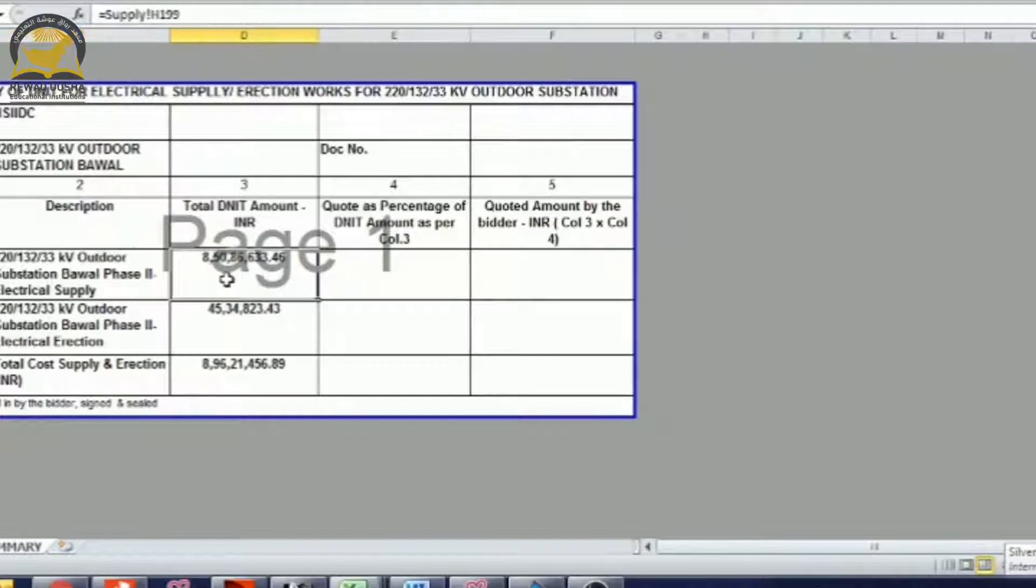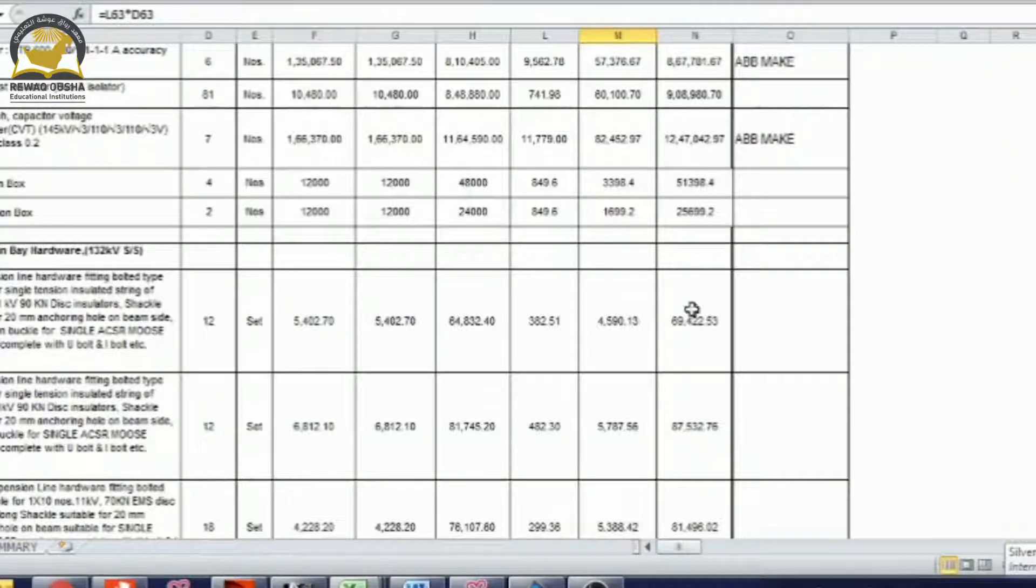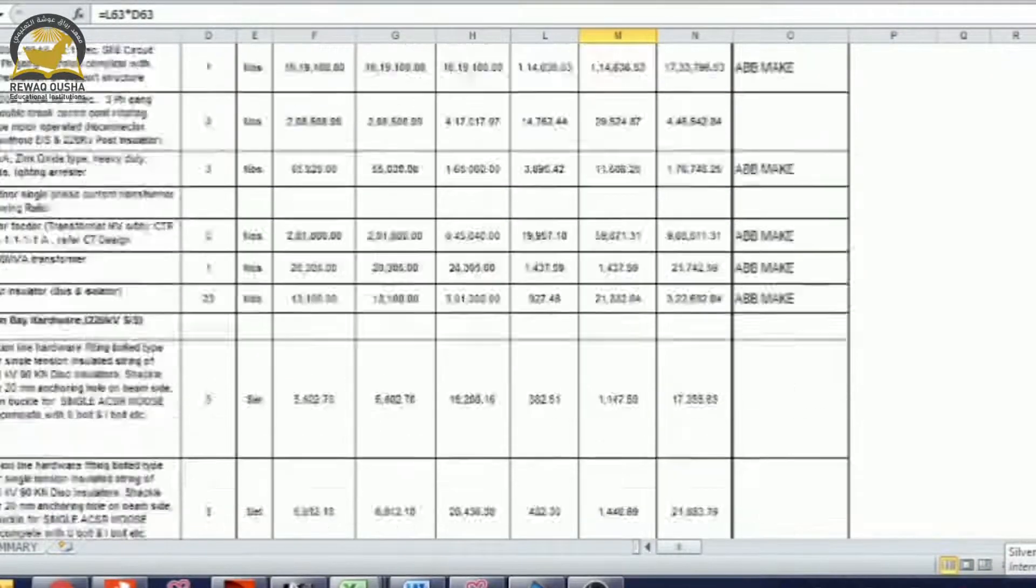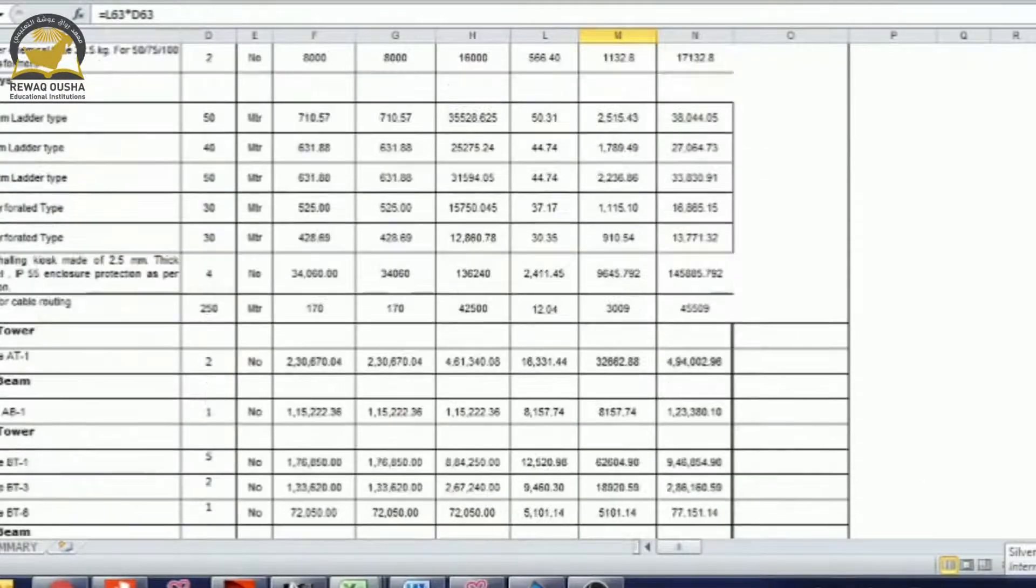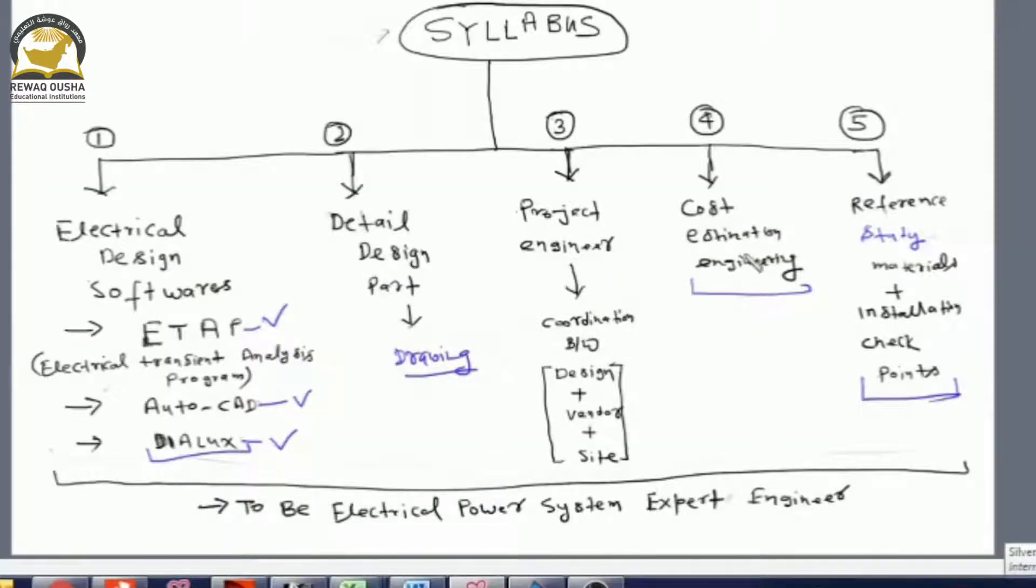For 220 by 132 by 33 kilovolt outdoor service stations, the cost of one bay for supply is 8,50,86,000, for erection 45,000, and total cost supply plus erection is 8,96,000. This is the breakup sheet. How to do cost estimation - all this we will discuss in the cost estimation engineering modules.